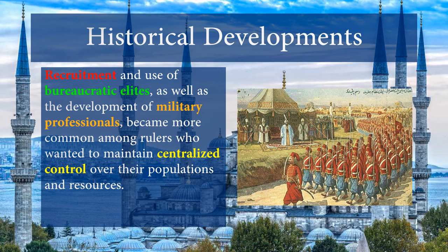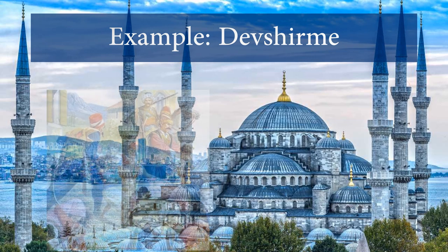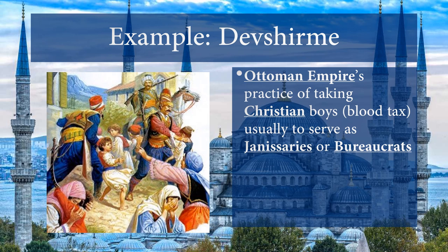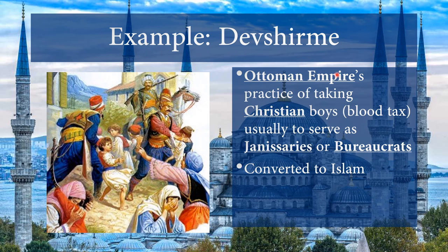The Devshirme system was the Ottoman Empire's practice of taking Christian boys — sometimes called a blood tax — every few years. They would be taken and made to serve in government, either as the elite forces of janissaries or as bureaucrats. They were converted to Islam, learned to speak Turkish, and those who could cut it ended up being in the janissaries.